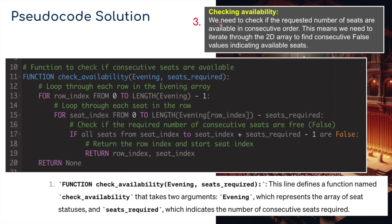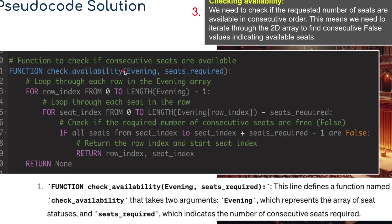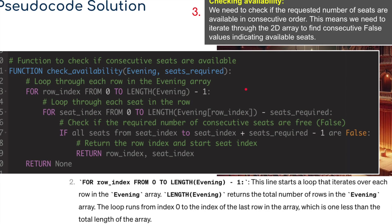Skipping validation for now, let's look at checking availability. We need to check if the requested number of seats are available in consecutive order. I've created a function called 'check_availability' that takes two arguments: 'evening', which represents the current state of the seating array, and 'seats_required', which indicates the number of consecutive seats needed. Inside, there's a for loop that iterates over each row - 'for row_index from 0 to len(evening) minus 1'. 'len(evening)' returns the total number of rows, and the loop runs from index zero to the last row index, which is one less than the total length.